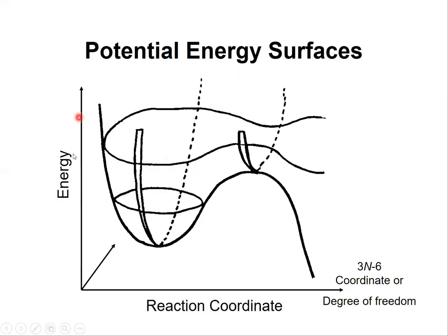If we put the energy on the z-axis and keep the x-axis and y-axis as some other reaction coordinate — the reaction coordinate is some kind of a variable — for any molecule we have 3N minus 6 coordinates or degrees of freedom. For example, if we have four atoms, 4 multiplied by 3 is 12, minus 6 is 6, meaning we have 6 degrees of freedom: bond lengths, bond angles, and dihedral angles among these four atoms.